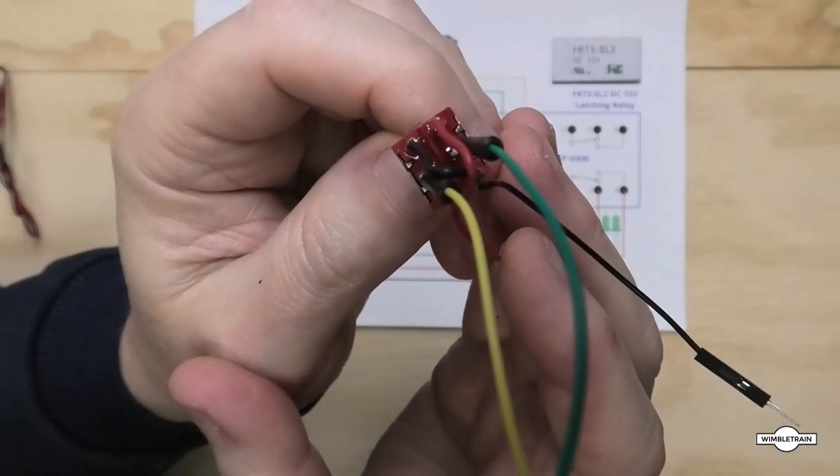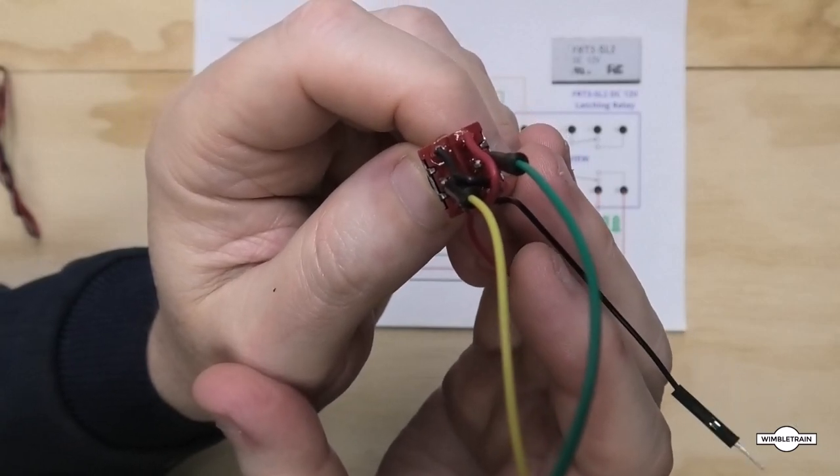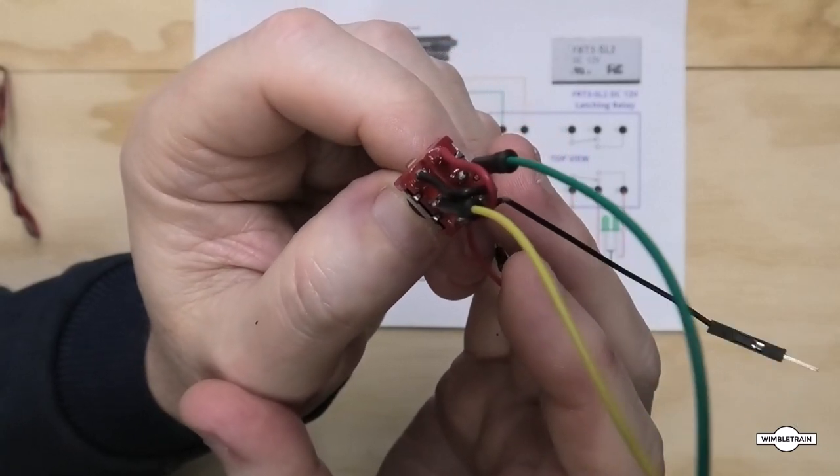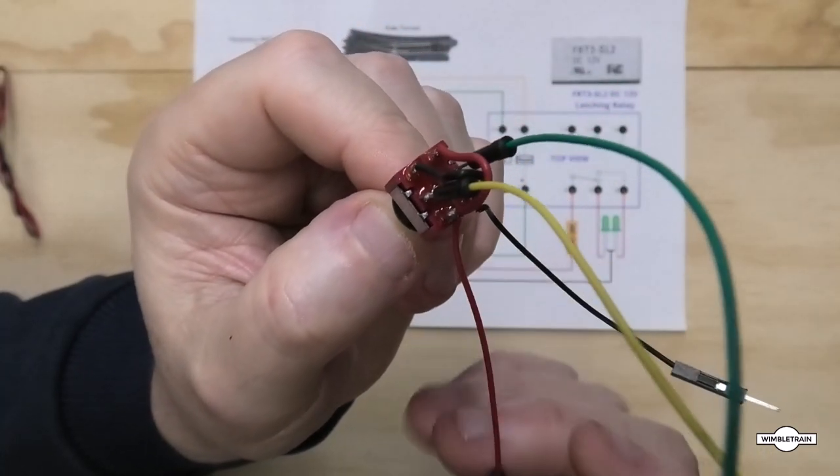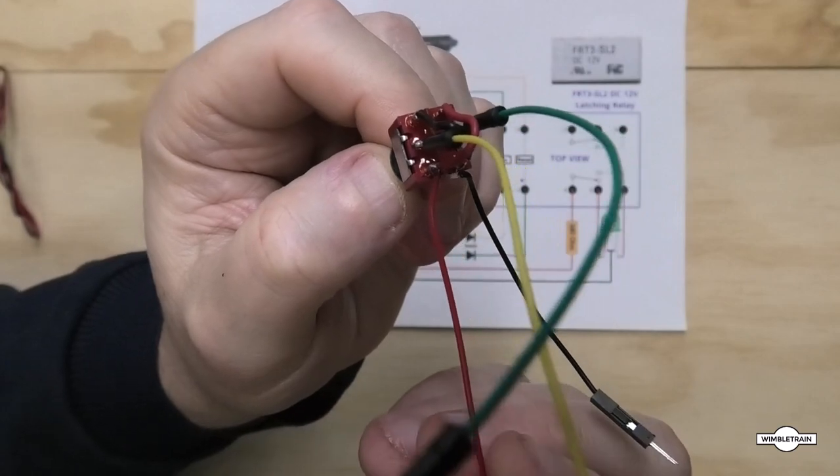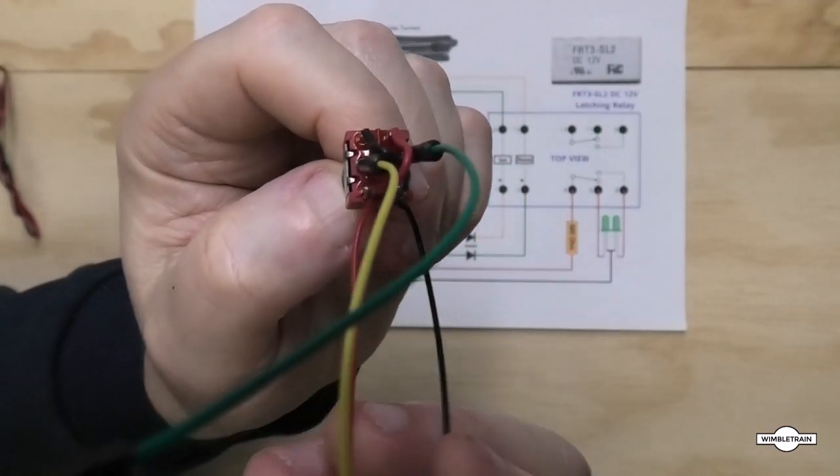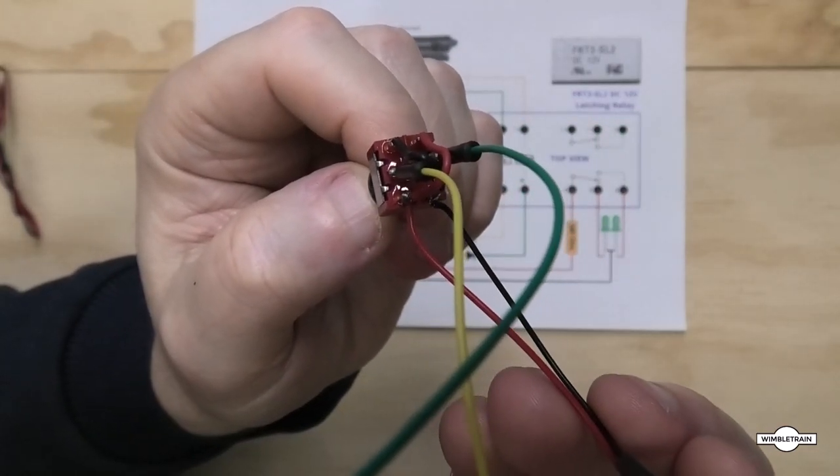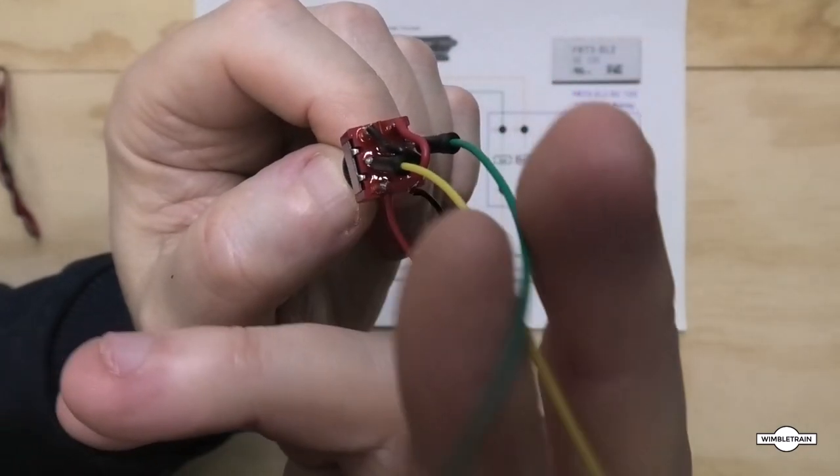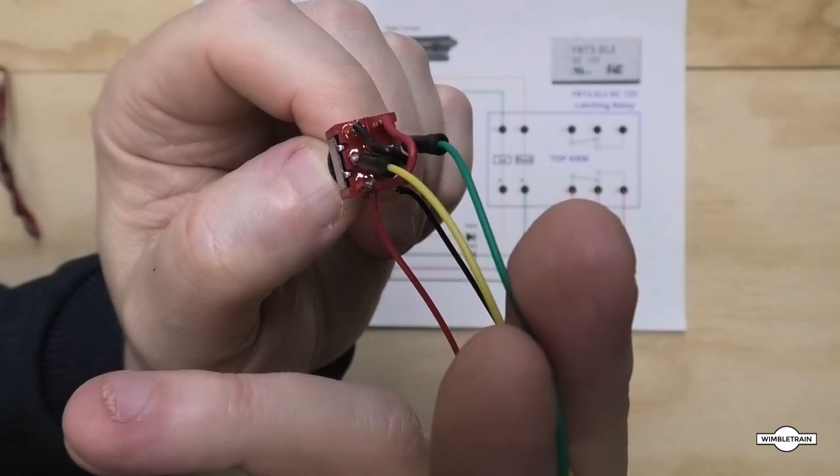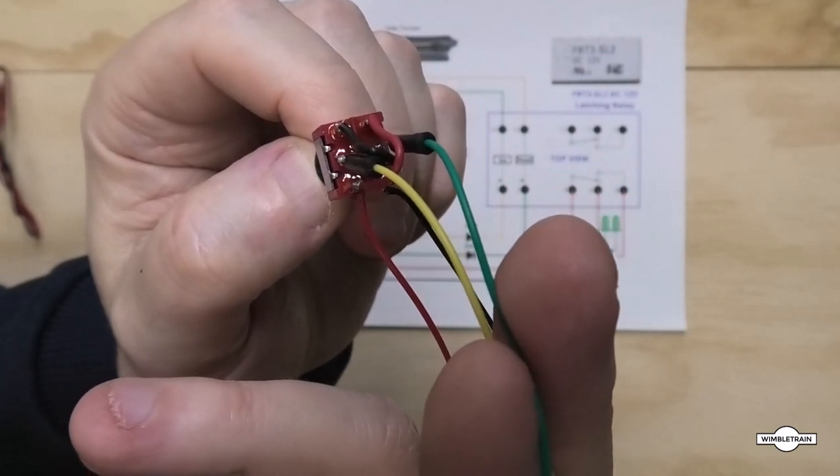So here's our switch wired up. Hopefully you can see the red and black wires crossing over, probably a bit hard to see with all that stuff in the way. And then at the bottom here we've got our two wires for our power supply, the black and red wires, and then the green and yellow for our Kato switch and the latching relay.